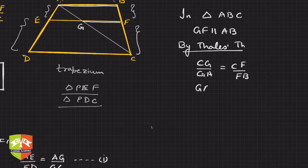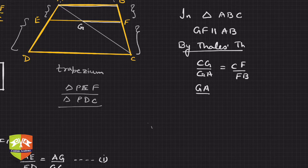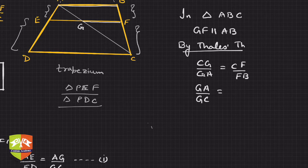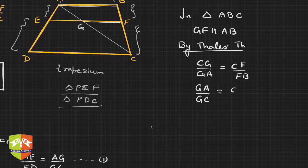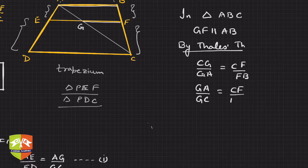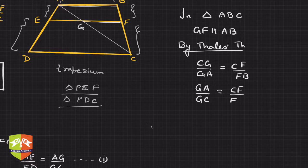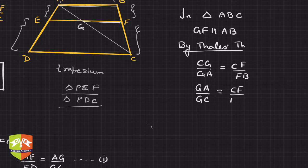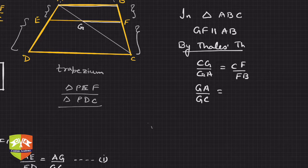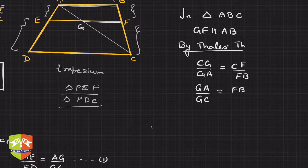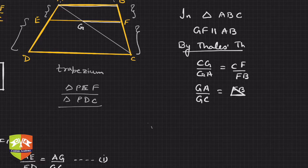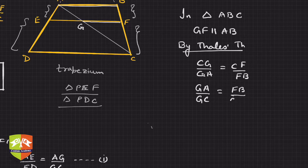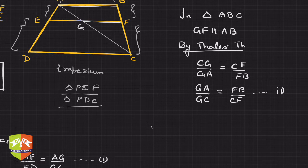What can we say? We can say CG upon GA is equal to CF upon FB. And applying invertendo or you take the reciprocal, it would be the same. So GA upon GC is equal to FB upon CF. This is relation number two.